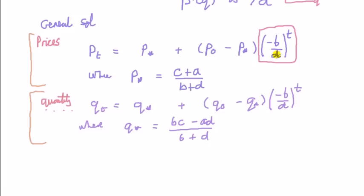That will happen if the number b is less than the number d. And then if b is less than d, it must mean that this fraction is less than one. And any number, which is a fraction less than one to the power of t will tend to zero.